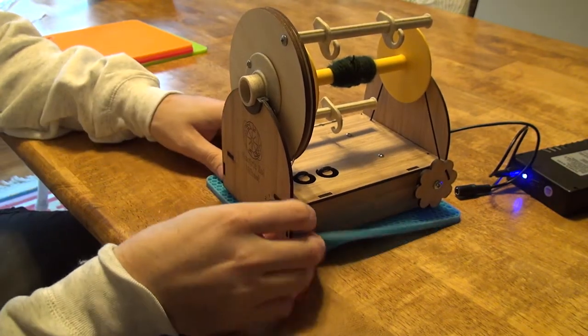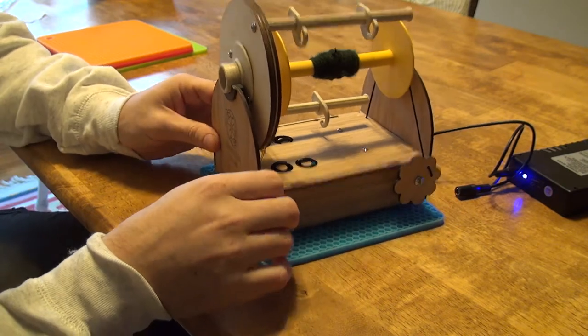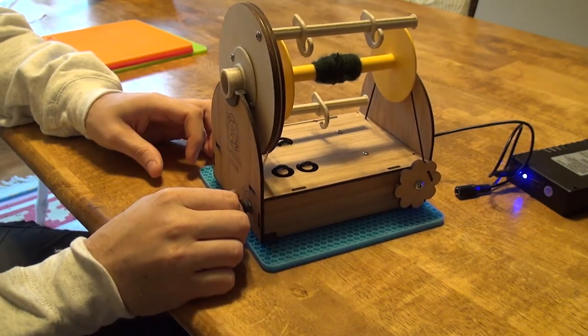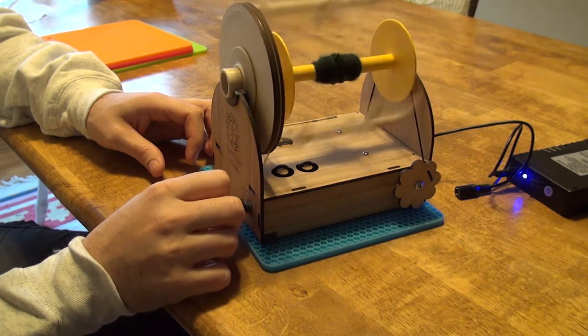So why would you want to use one of these hot pot holders underneath the Electric Eel Wheel? Well, one of the reasons is it makes it a little bit quieter, so that's sort of a nice side effect.